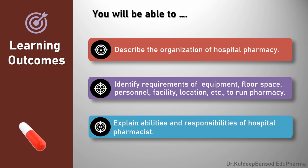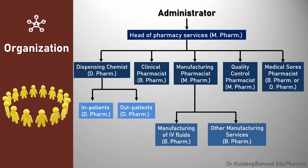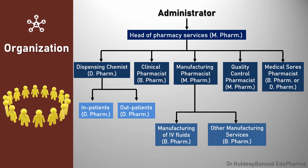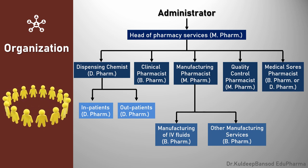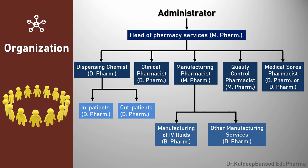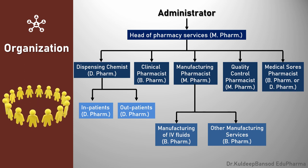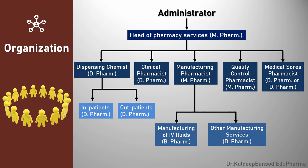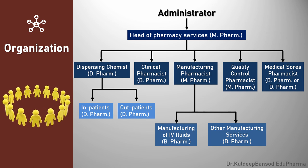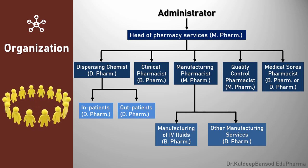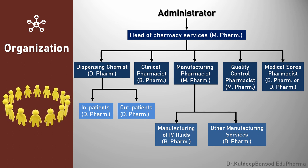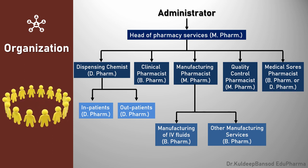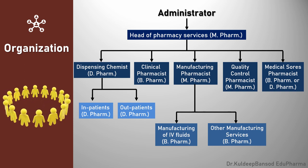Let us see the organization. The well-organized hospital pharmacy consists of various divisions like dispensing, clinical, manufacturing, quality control, storage, administration, library, etc. Here, a general organization of hospital pharmacy is given with their requirement of minimal qualification.